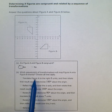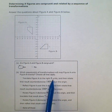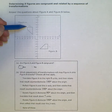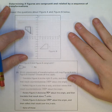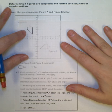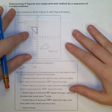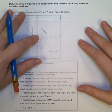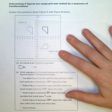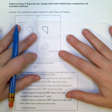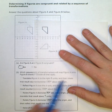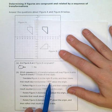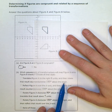Now the first one says, translate figure A right six units. So that would mean I'm taking this figure and moving it to the right. One, two, three, four, five, six units. So that means it would be right there. Then rotate the result counterclockwise 180 degrees about the origin.